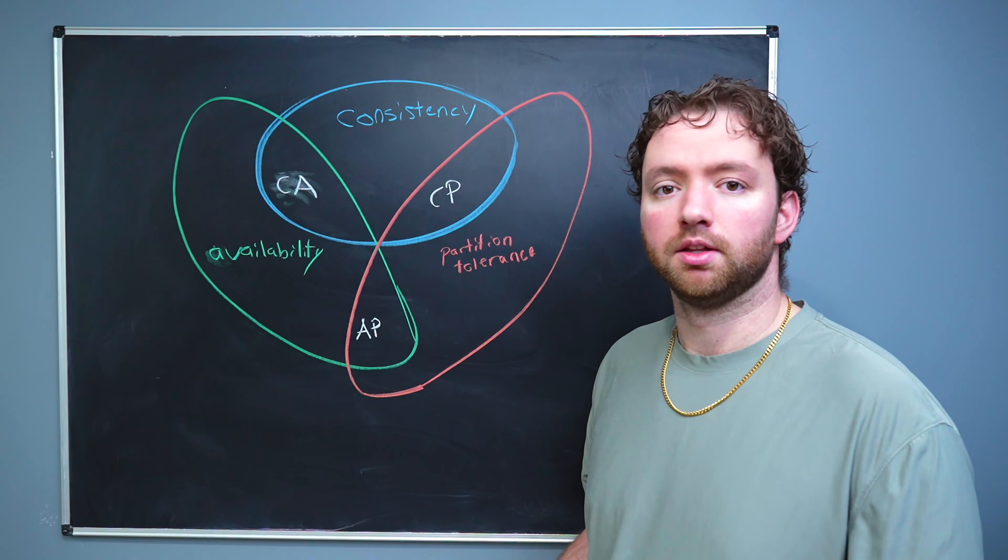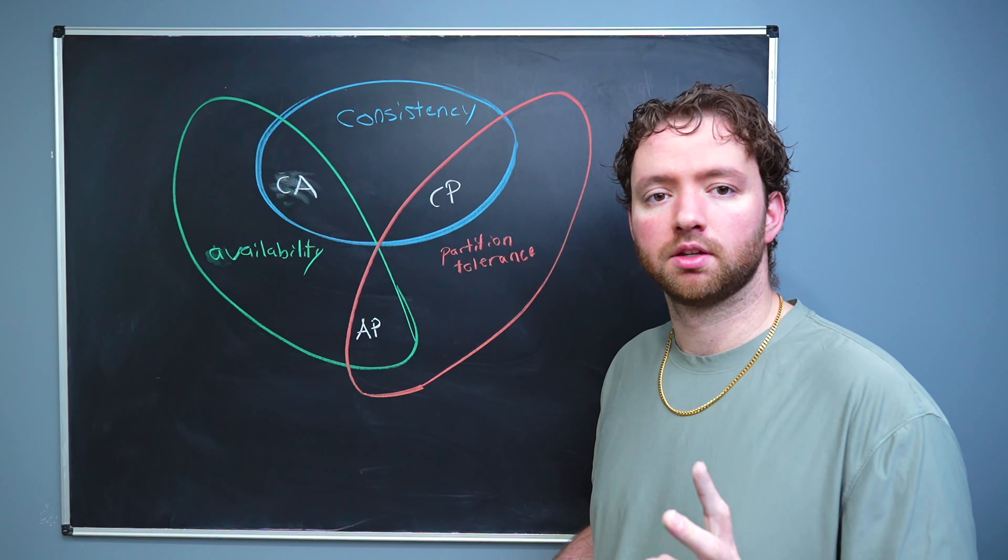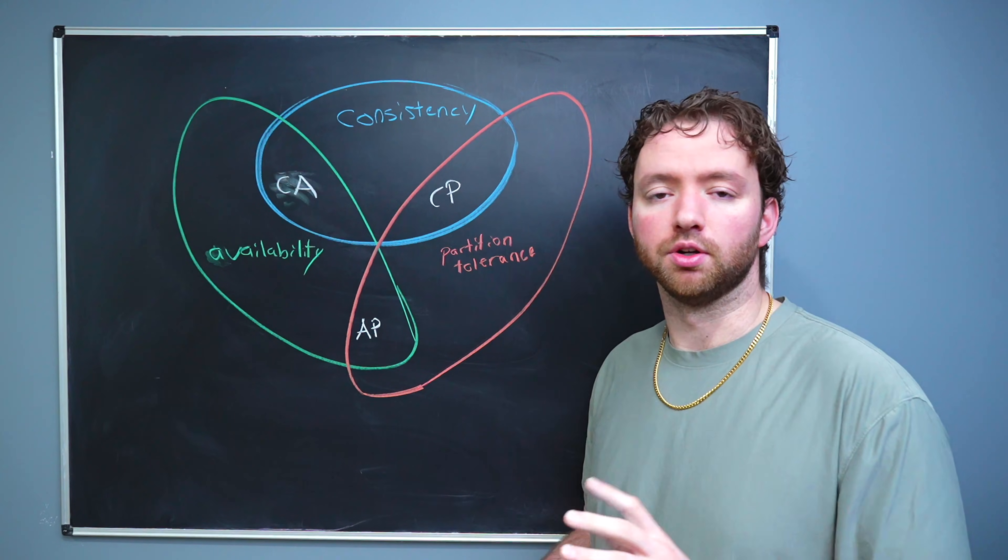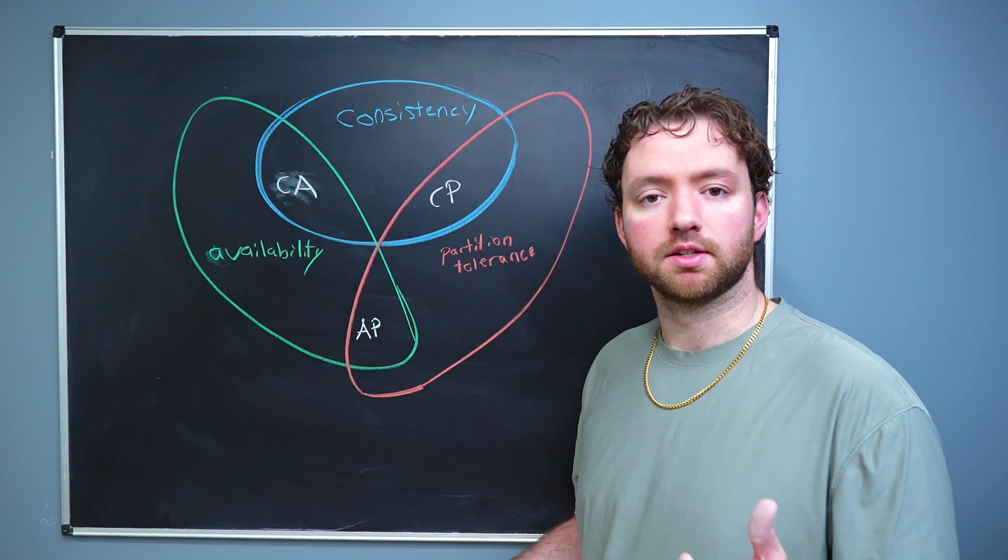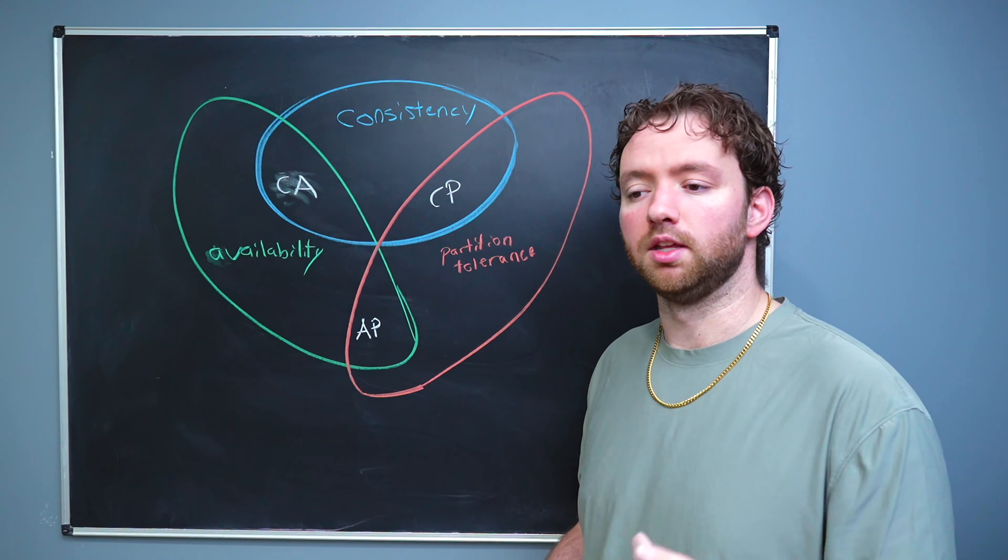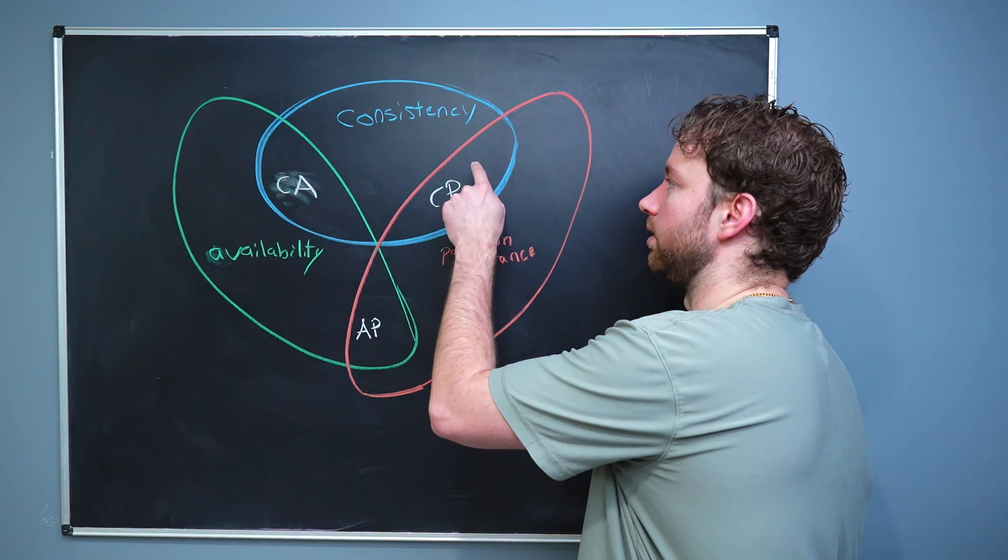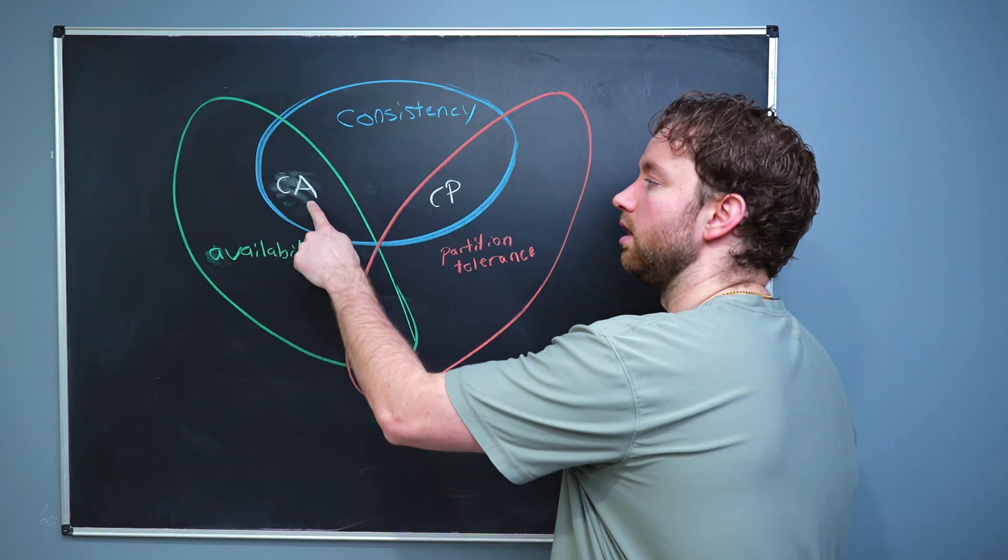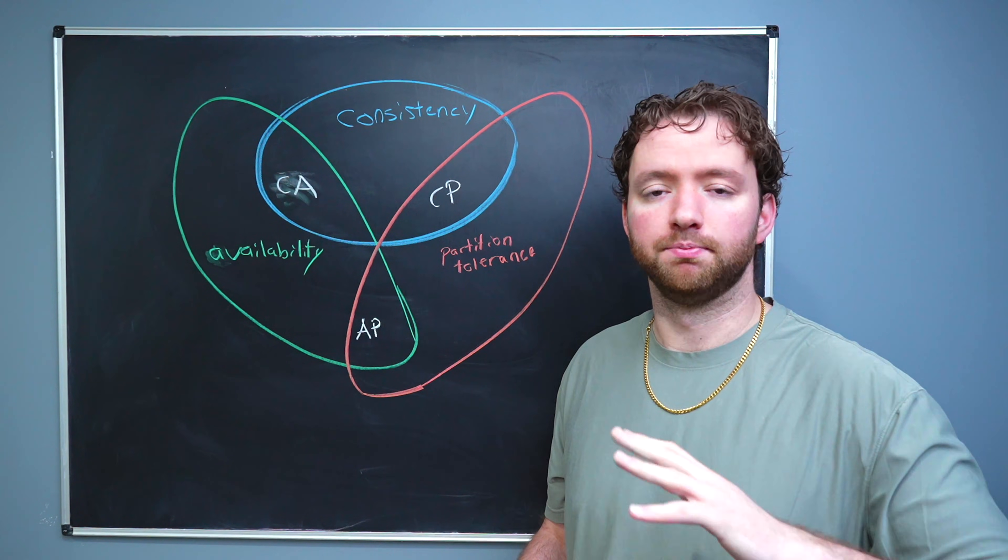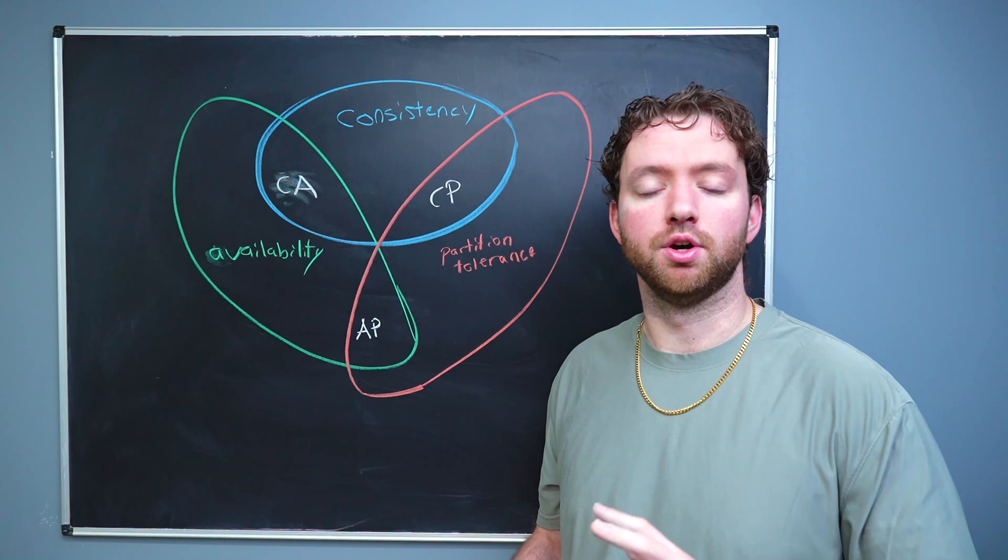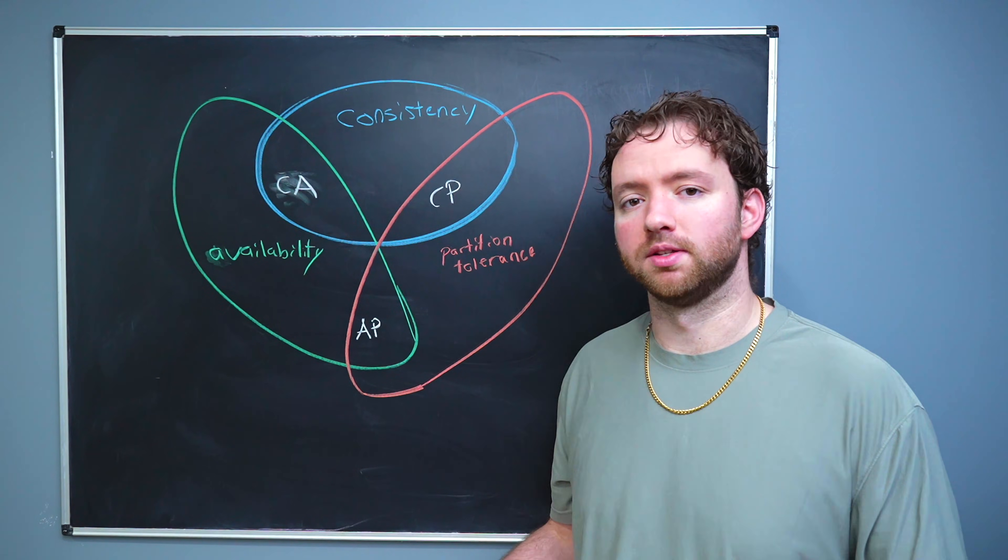AP, this is a system that will prioritize availability, meaning if there is a disconnection between the nodes, reading from one node versus the other, you might get different data, but the system is available. Now let's talk about CP. If there is a disconnection between nodes and the data is not in sync, the system becomes unavailable, but we're not serving inconsistent data. So we always prioritize consistency in this section. And then in this section, we have a system that always serves consistent data and is always available because there's never a scenario where those nodes lose connection between each other. The nodes will always be in sync and requests will always get a response.